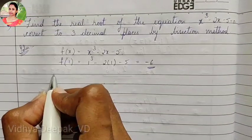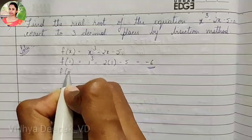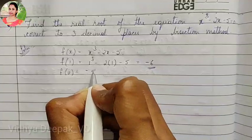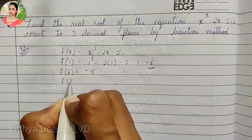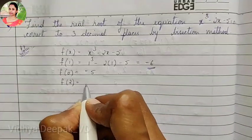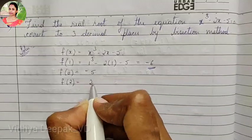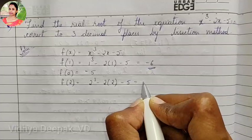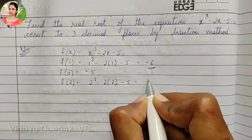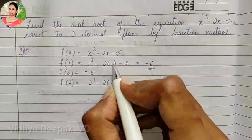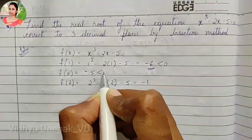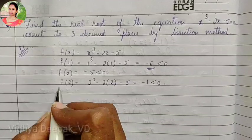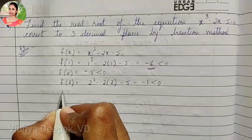We also try f of 0, which is 0 cube minus 0 minus 5. Then f of 2: 2 cube minus 2 into 2 minus 5, giving the answer minus 1. So f(1), f(0), and f(2) are all less than 0. We need to find a positive value so we can say the root lies between those two.